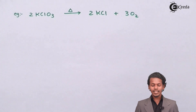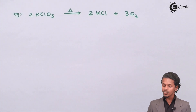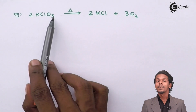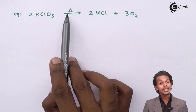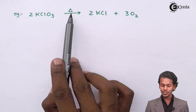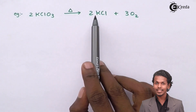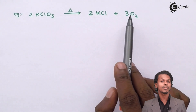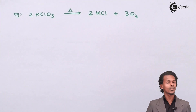As you can see, two moles of KClO₃ — potassium chlorate — undergo thermal decomposition to give two moles of KCl, that is potassium chloride, plus three moles of oxygen molecule O₂.